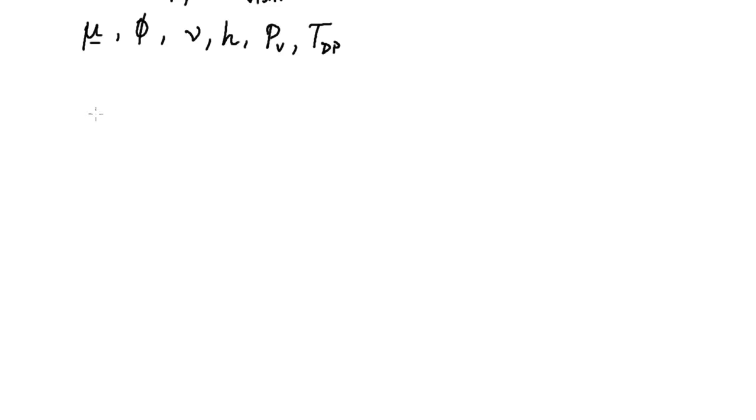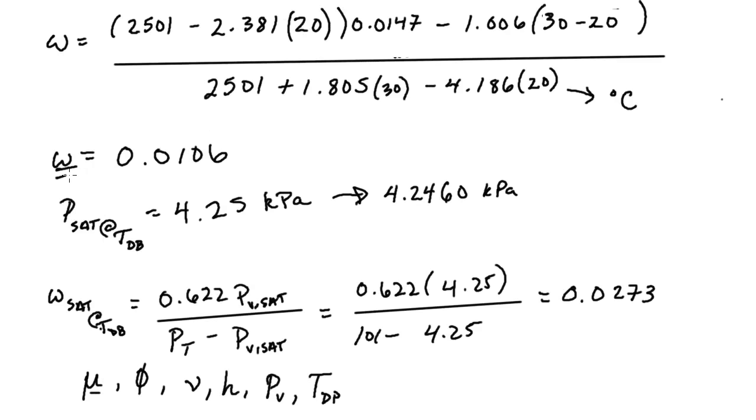And this will be an easy one because we already have the information from what it was defined to be. So mu is defined to be omega divided by the omega at saturation at a given temperature and pressure. And so if we're looking at a temperature of what we have for dry bulb, and we have this total pressure that we've been dealing with, we already calculated out both of these things. So our specific humidity ratio for our sample is 0.0106, and the saturation at the same temperature is 0.0273.